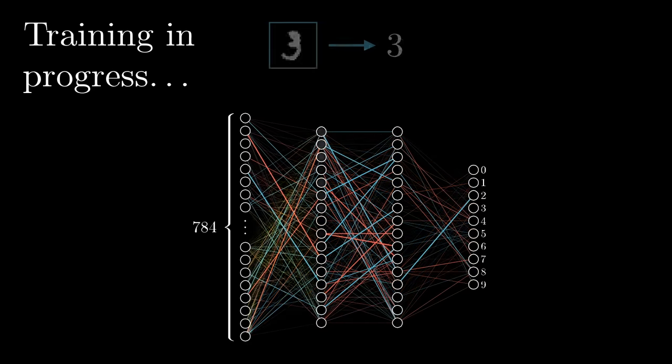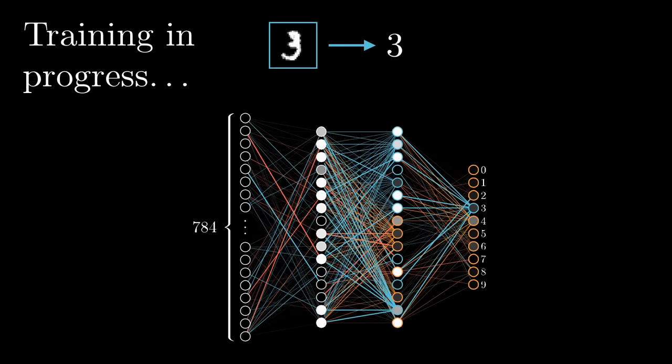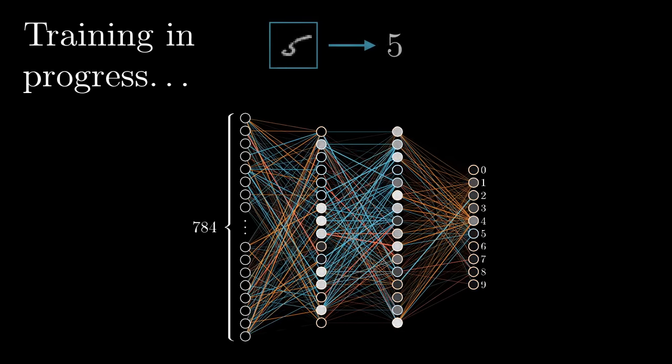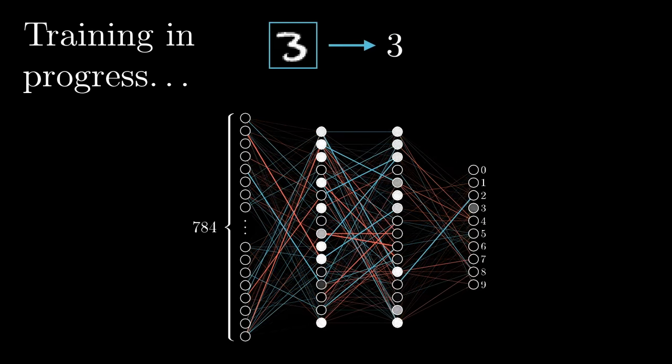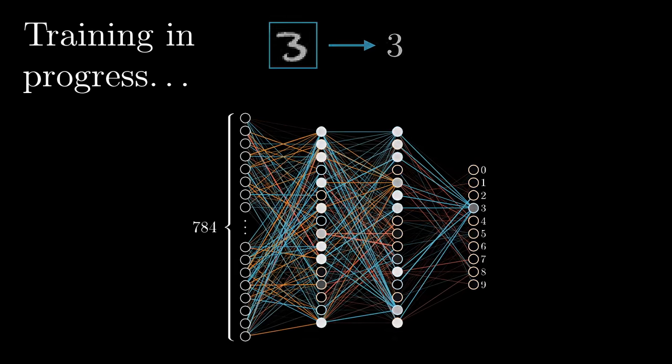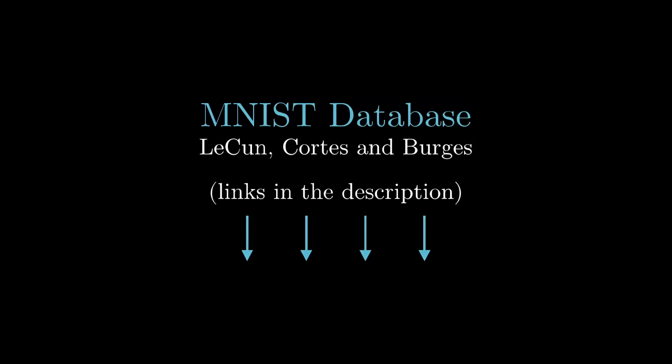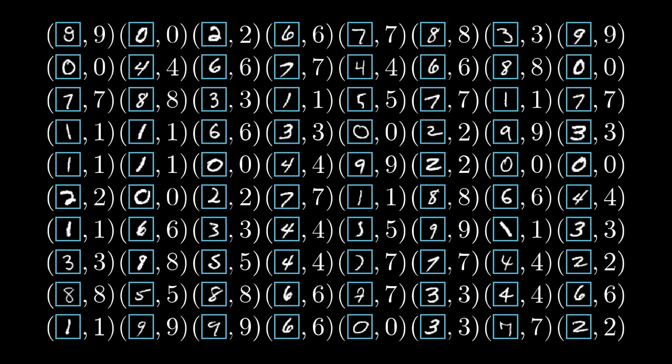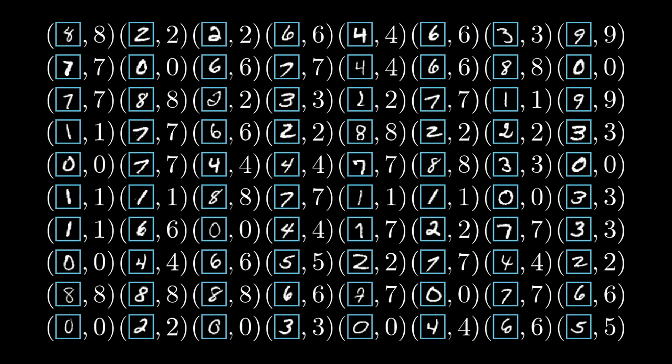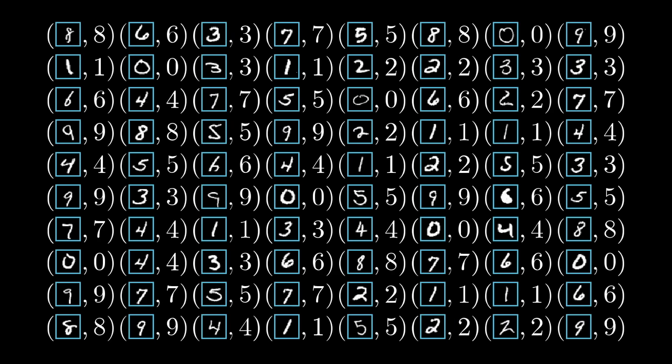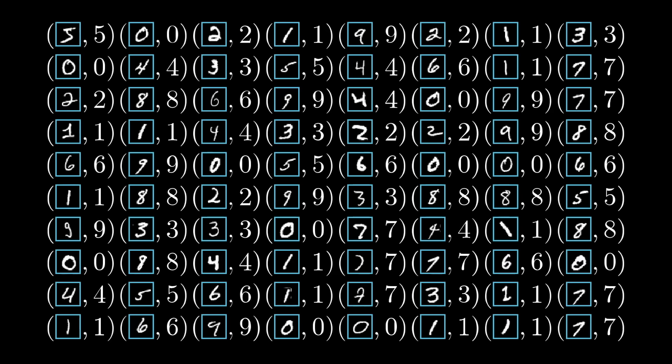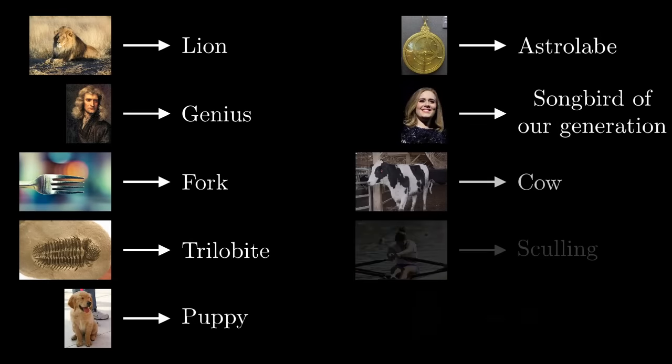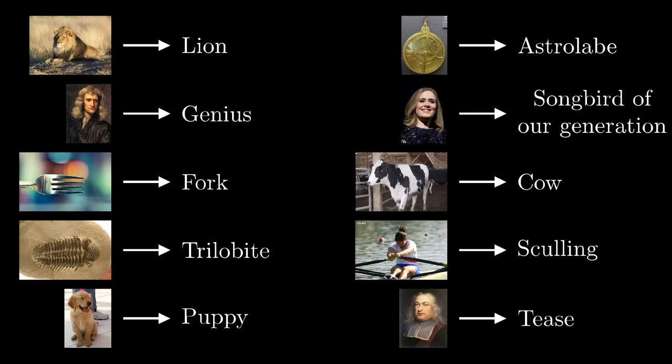Before that, one thing worth emphasizing is that, for this algorithm to work, and this goes for all sorts of machine learning beyond just neural networks, you need a lot of training data. In our case, one thing that makes handwritten digits such a nice example is that there exists the MNIST database, with so many examples that have been labeled by humans. So a common challenge that those of you working in machine learning will be familiar with is just getting the labeled training data that you actually need, whether that's having people label tens of thousands of images, or whatever other data type you might be dealing with.